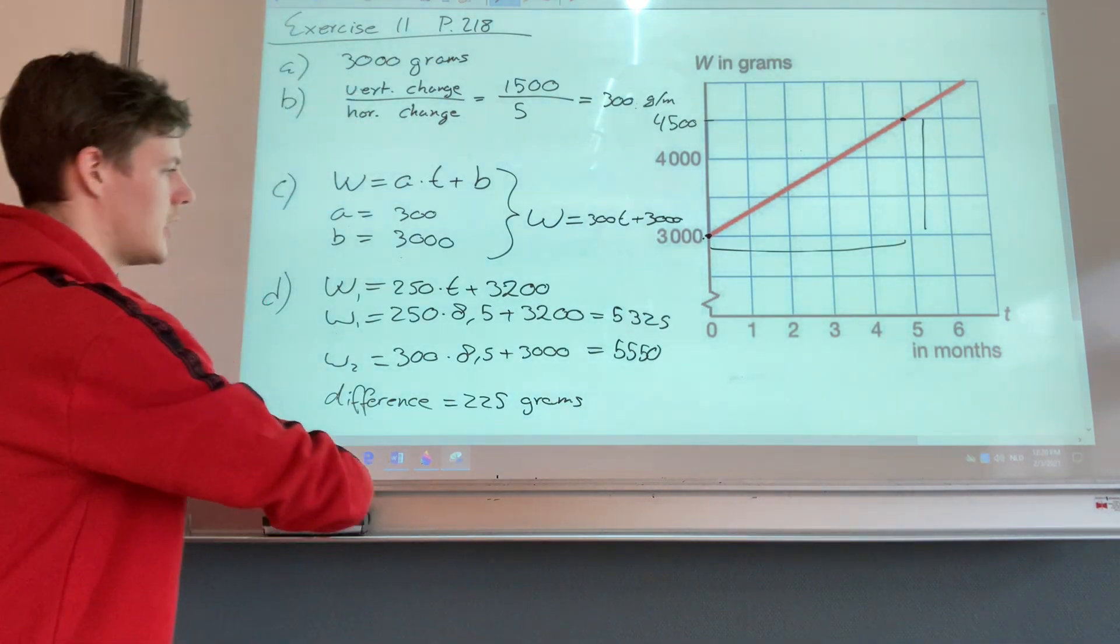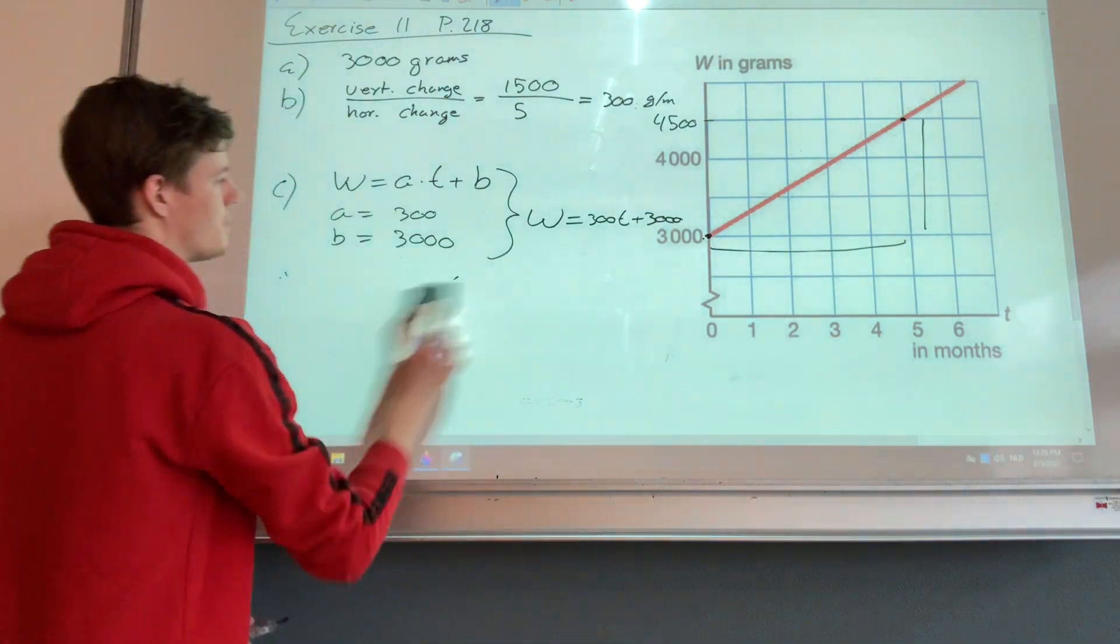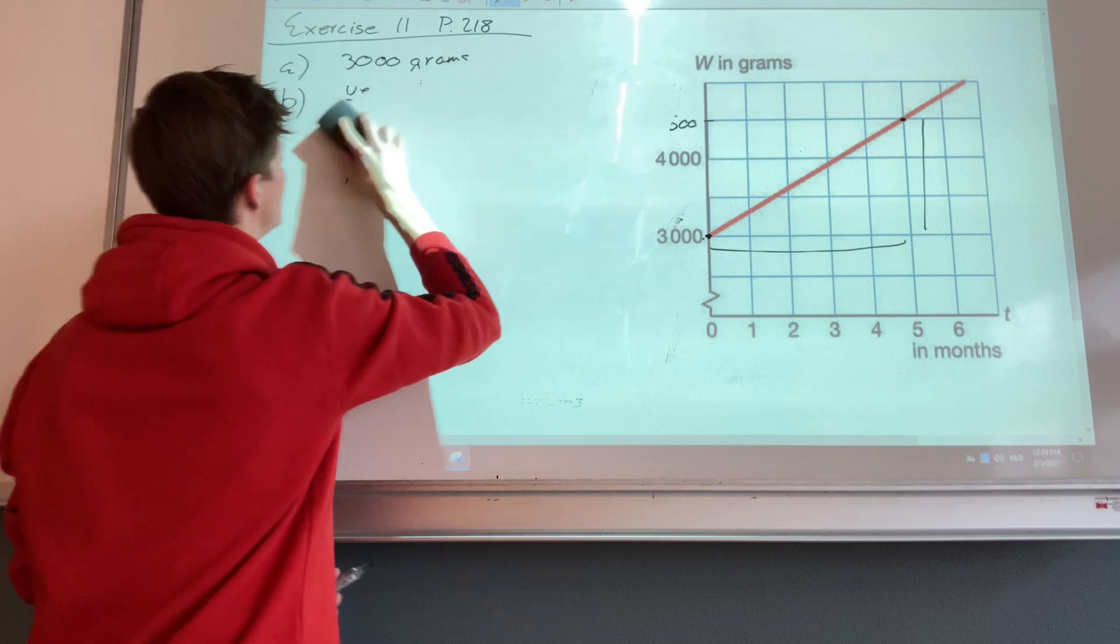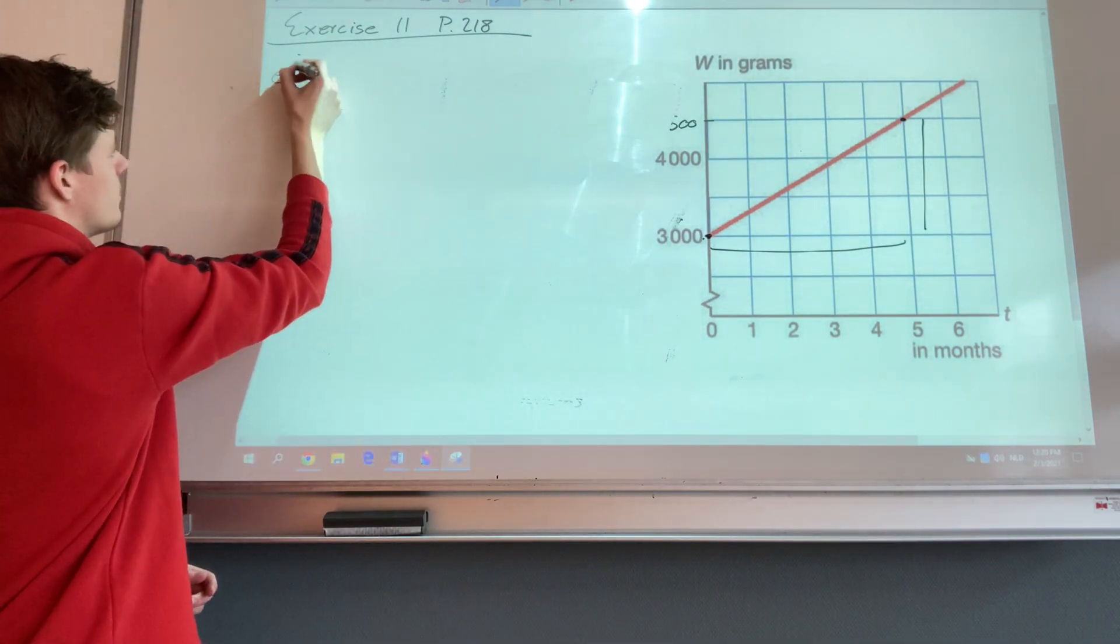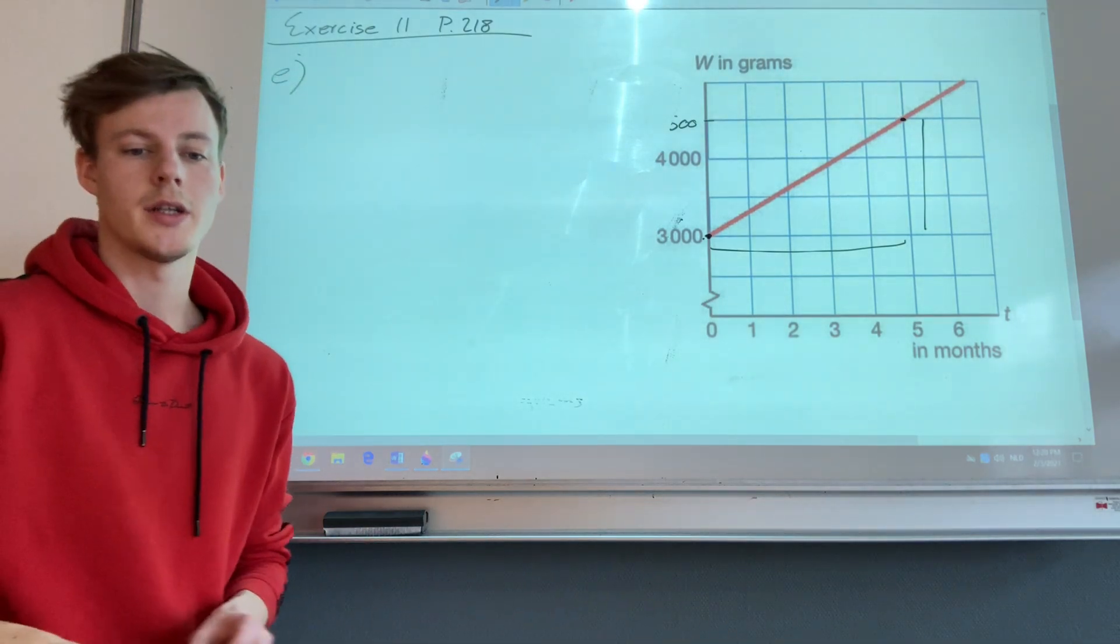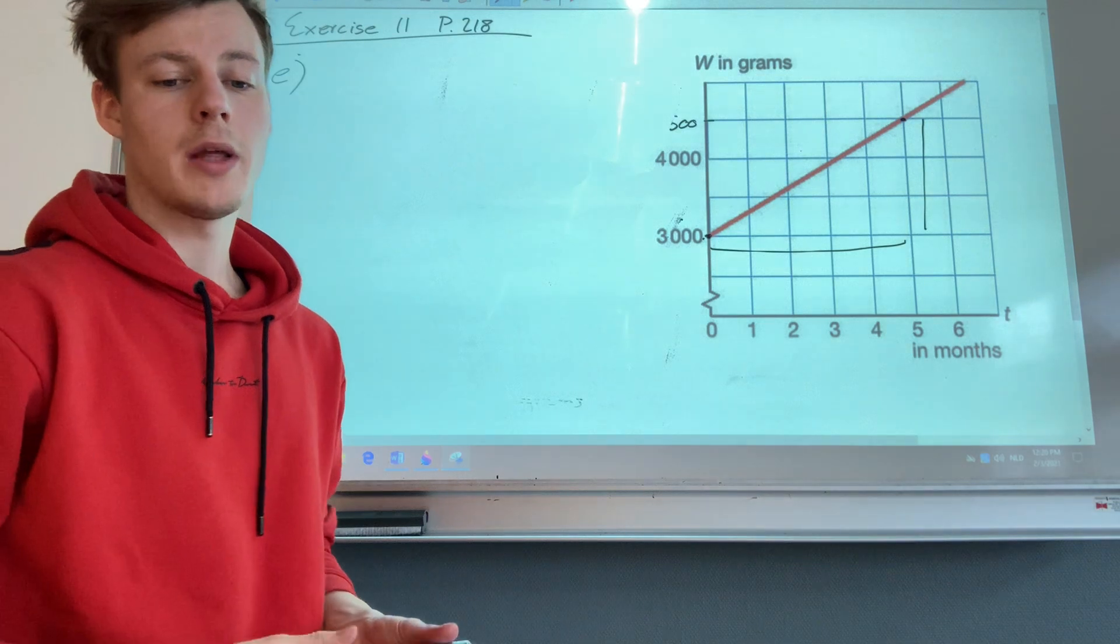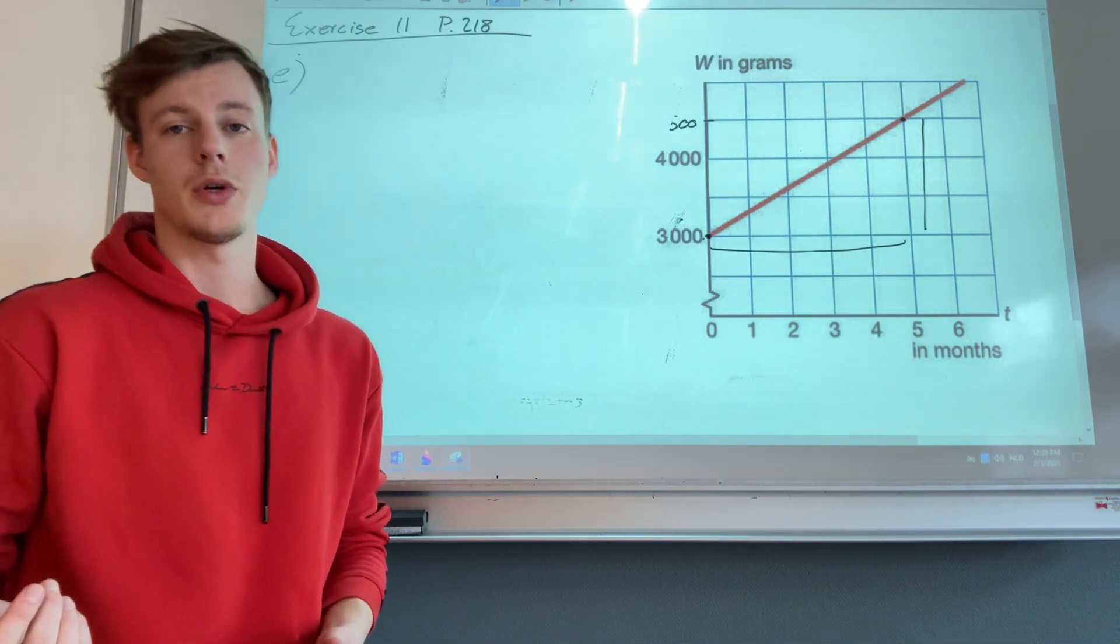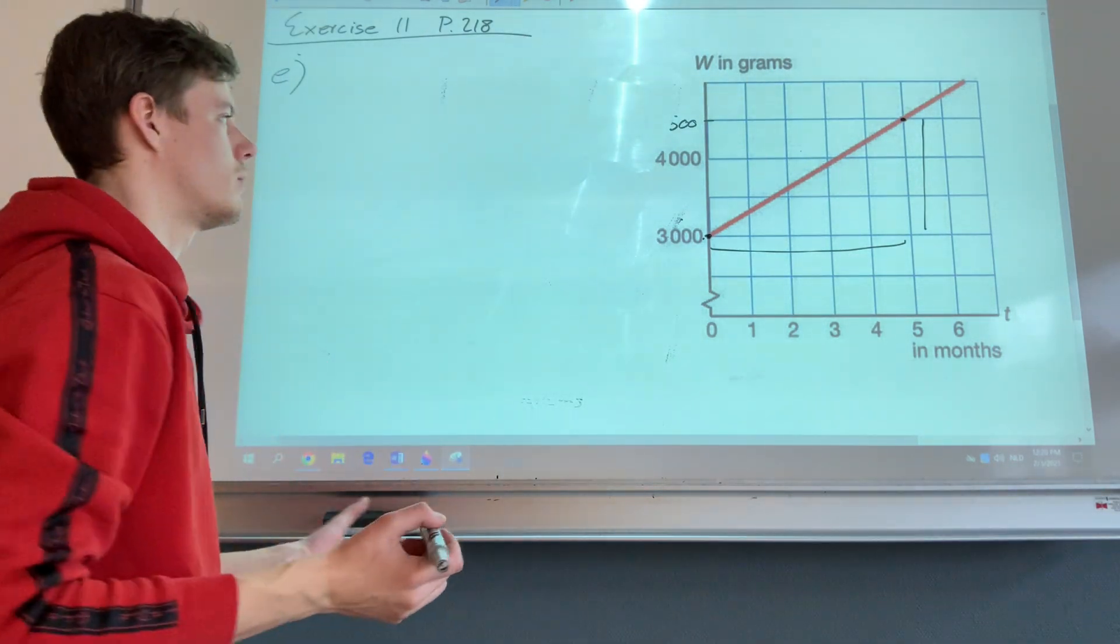We go to exercise E. In this exercise they ask, after how many months do Maureen and Michael have the same weight? So in this case, both formulas should be equal.